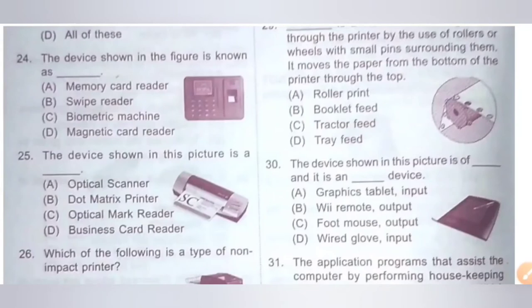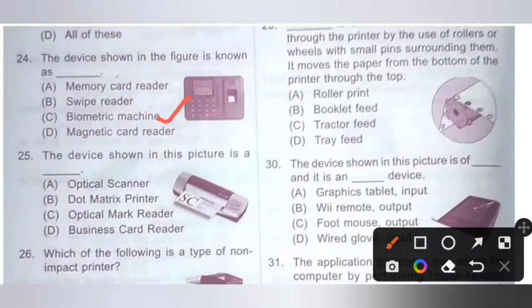Question 24: The device shown in the figure is known as dash. Options: A. Memory card reader, B. Swipe reader, C. Biometric machine, D. Magnetic card reader. The correct option is Option C — biometric machine. The device shown in the figure is known as a biometric machine.